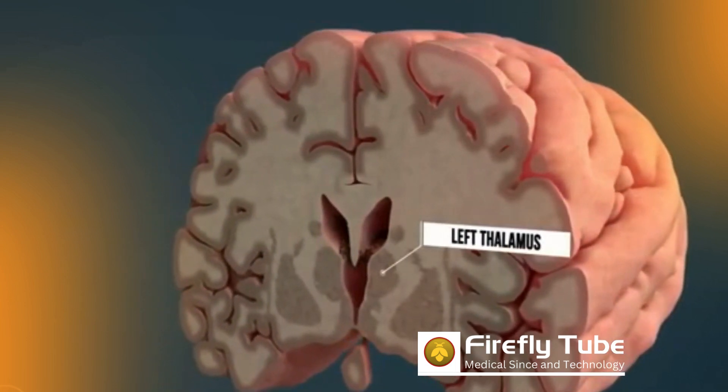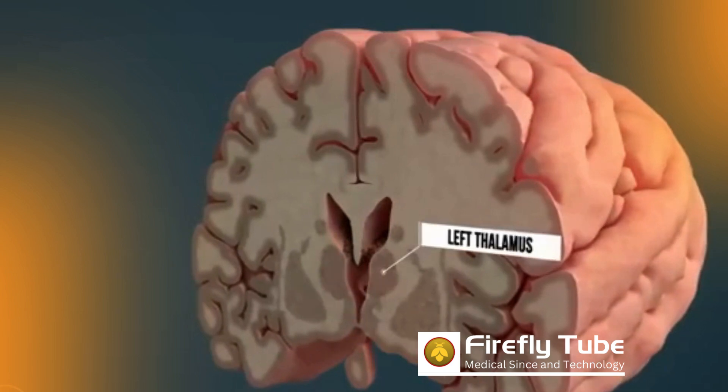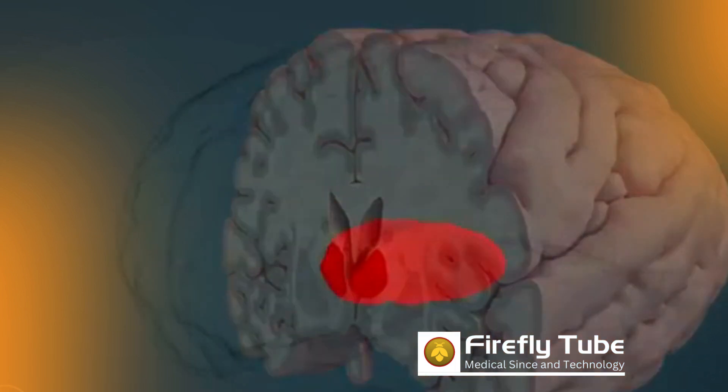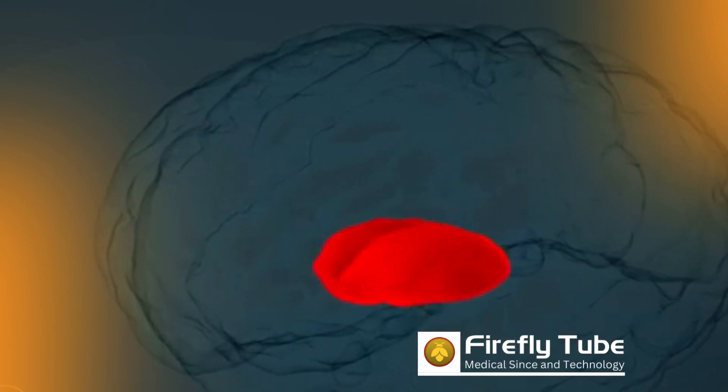All sensory perceptions, with the exception of the sense of smell, are processed and filtered by the thalamus before they reach the cerebral cortex. For this reason, we only perceive a few of the numerous sensory stimuli.